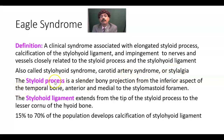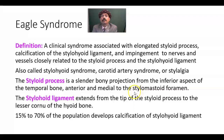What is the styloid process? This is a slender bony projection from the inferior aspect of the temporal bone, anterior and medial to the stylomastoid foramen. We know that through the stylomastoid foramen, the facial nerve comes out.